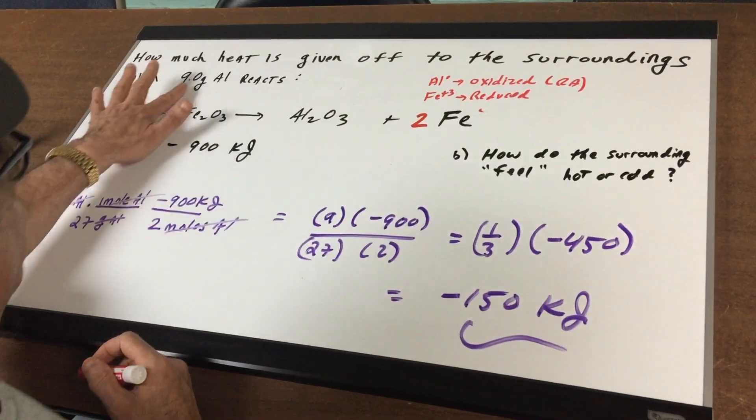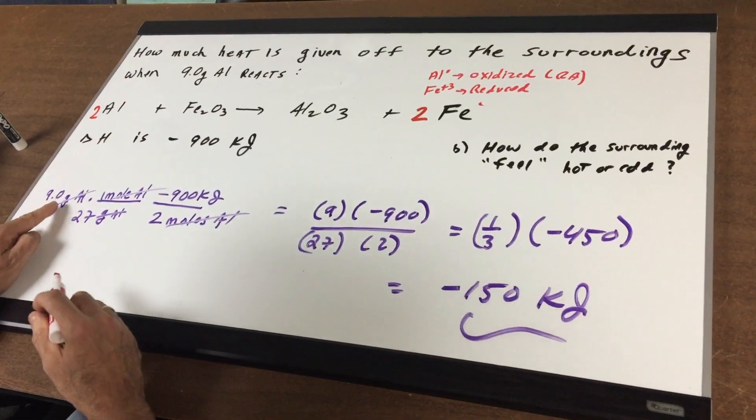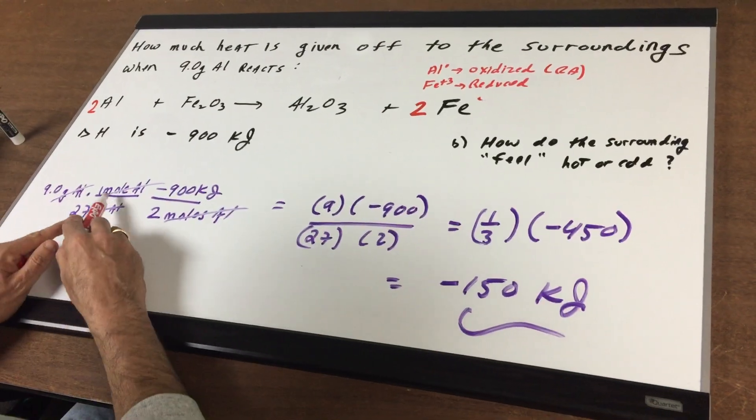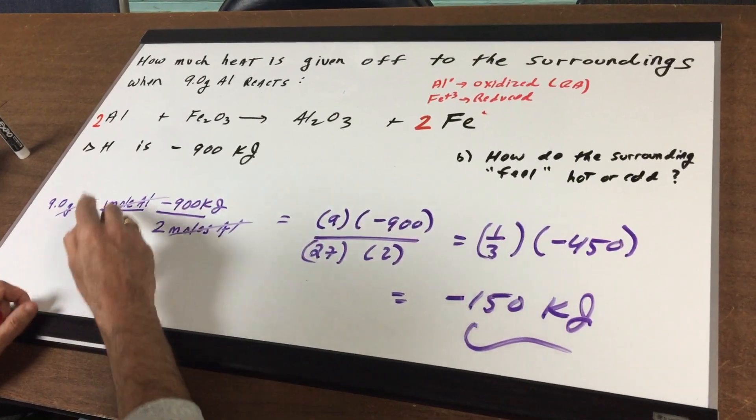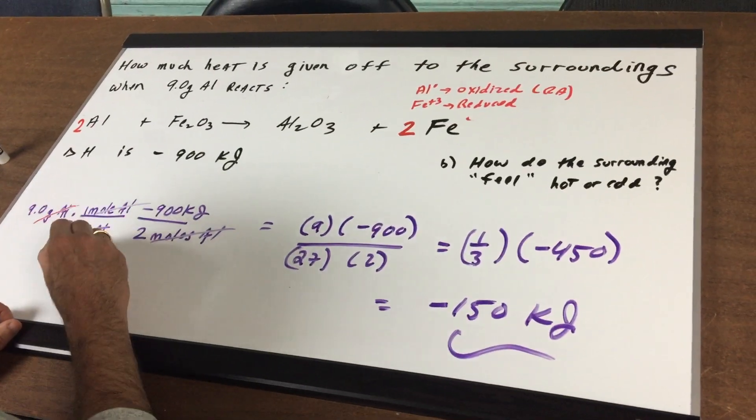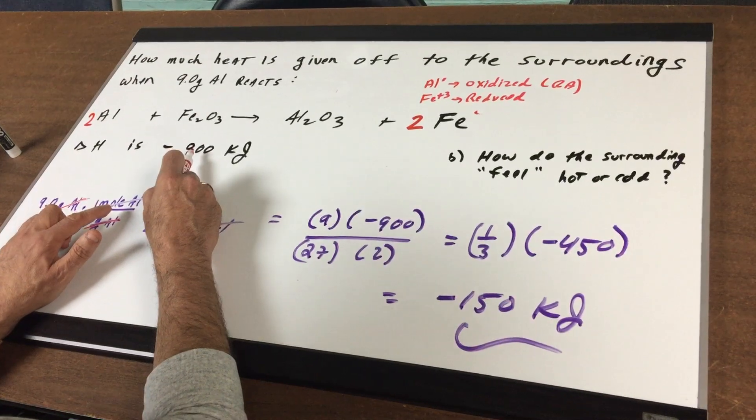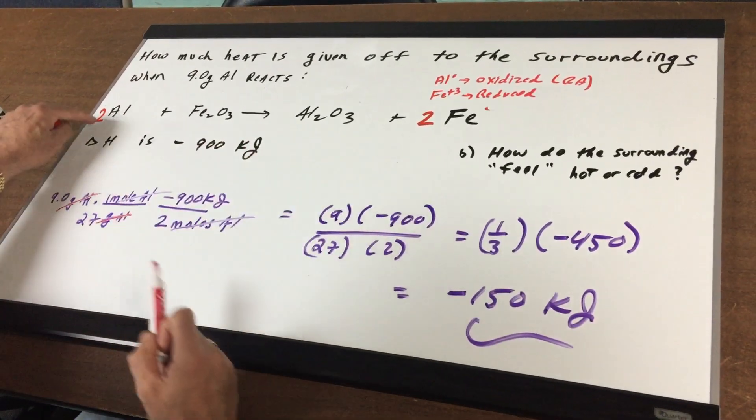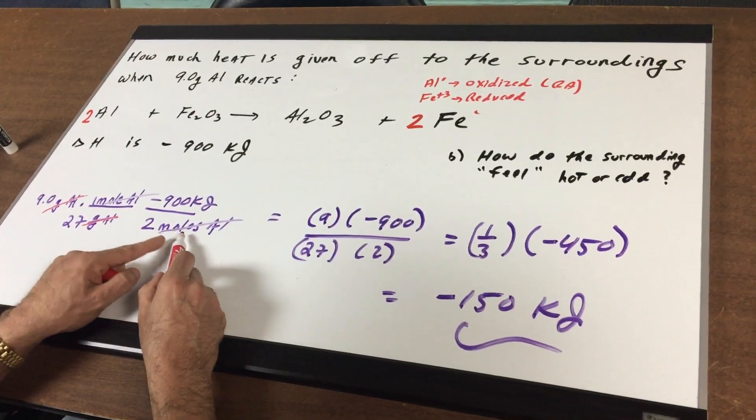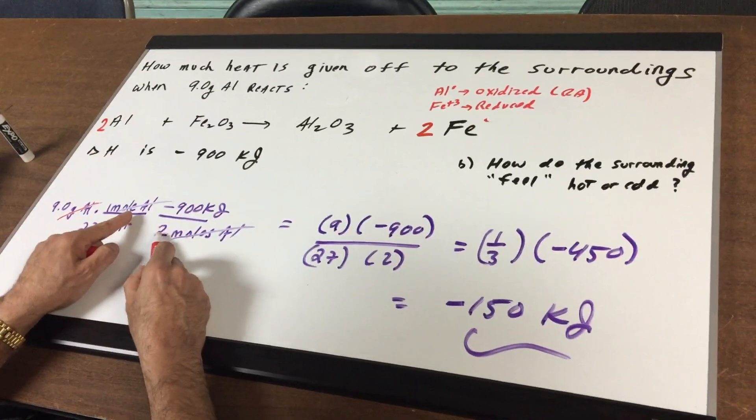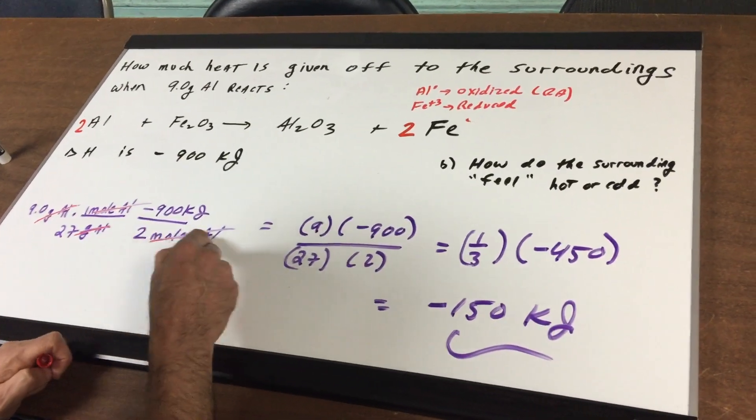All right, let's write together. We have 9 grams of aluminum, and we want to know how much heat's given off. So, we write the 9 grams of aluminum, and one mole, you always convert it into moles. One mole of aluminum is 27 grams. Grams of aluminum cancels. This reaction gives off minus 900 kilojoules of heat for two moles. So, you put the same one in the bottom, there's your moles of aluminum, there's two moles of aluminum, and it's minus 900 kilojoules. That crosses this out.